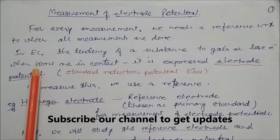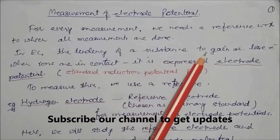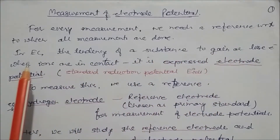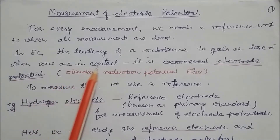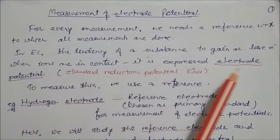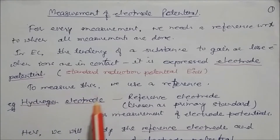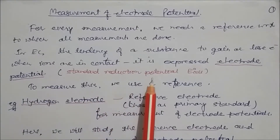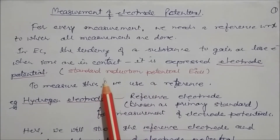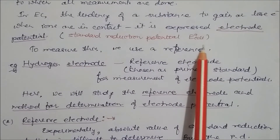In an electrochemical cell, the tendency of a substance to gain or lose electrons when ions are in contact is expressed in terms of electrode potential. If measured at 25 degrees centigrade, it is called the standard reduction potential, or E0 of the cell.